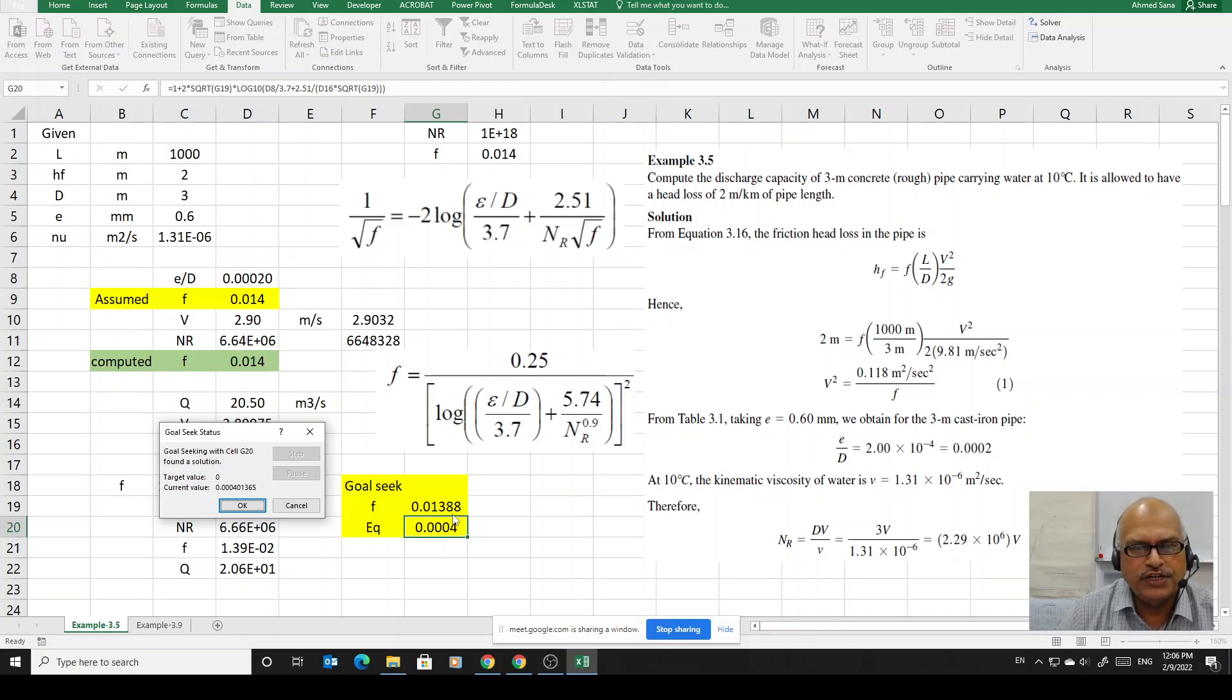In this manner, you can utilize this goal seek function in order to solve not only this implicit equation by trials, but any implicit equation which you can come across in any of the engineering fields. You can use this useful function goal seek. Please let me know if there is any questions or any confusion at this moment.